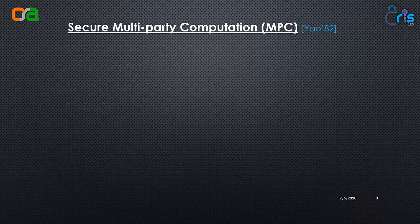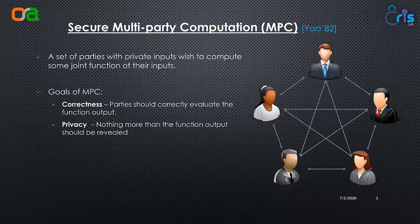Let's start with what secure multiparty computation or MPC is. More formally, secure multiparty computation is where a set of parties have their private inputs and they wish to compute some joint function of their inputs. The goals for MPC are: first, correctness — at the end of the computation all parties should get the correct output; and second, privacy — nothing more than the function output should be revealed, so no party should be able to derive any additional information about another party's input.